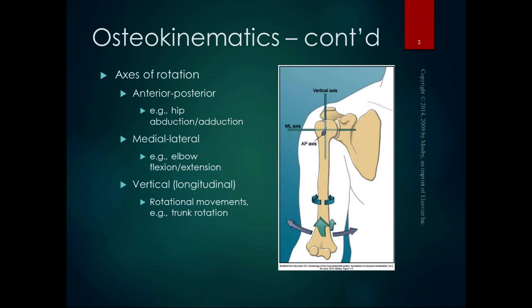Frontal plane motions such as abduction and adduction occur around the anterior-posterior axis. The medial-lateral axis runs from medial to lateral through the shoulder joint, perpendicular to the sagittal plane, and is the axis of rotation for sagittal plane movements such as shoulder or elbow flexion and extension. The vertical or longitudinal axis is the axis of rotation for transverse plane movements — always rotational — and is perpendicular to the horizontal or transverse plane, like a rotisserie spit running down the humerus.